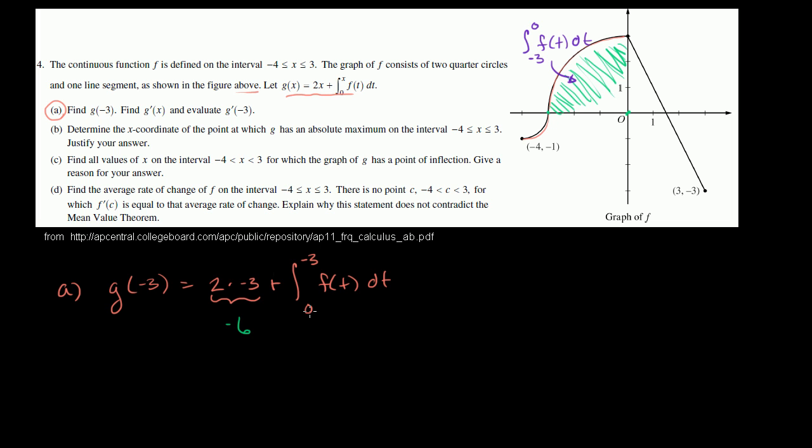They've swapped it. They have the larger number as the lower bound. They have 0 as the lower bound. So what we could do is rewrite this. This is the same thing. This is equal to -6 minus, if you swap the bounds of integration, you've swapped the sign on the integral. So we could say minus from -3 to 0 of f(t)dt.